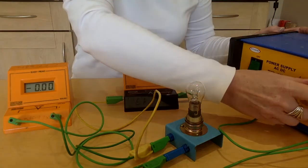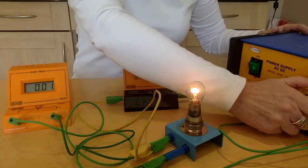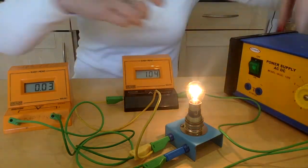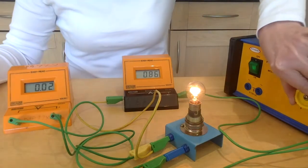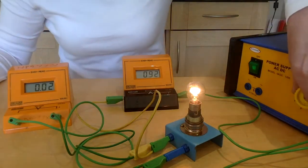What we're going to do instead is we are going to vary - do you see what happens to the brightness of the bulb? - we're going to use the dial on the power pack.